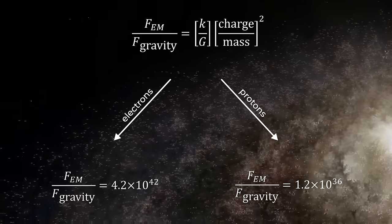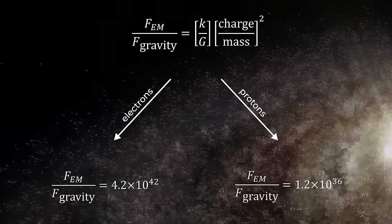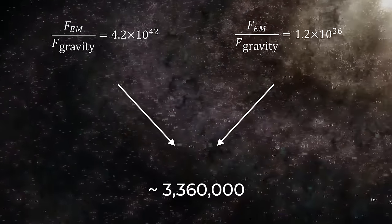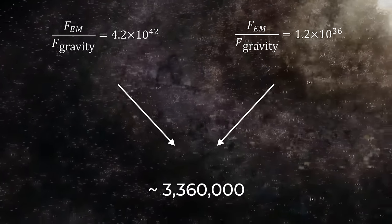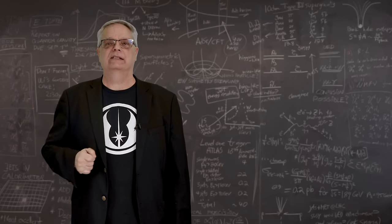But for two protons, gravity is only 1.2 times 10 to the 36 times weaker. The second is nearly 3.5 million times bigger than the first. And that's how one compares gravity and electromagnetism.